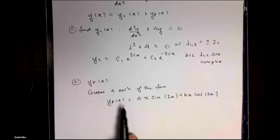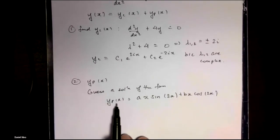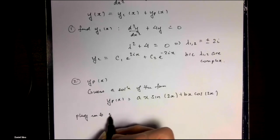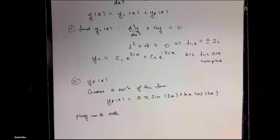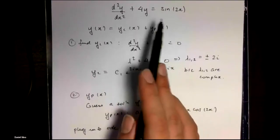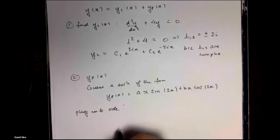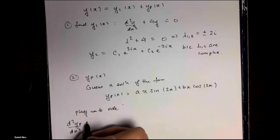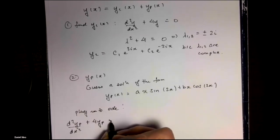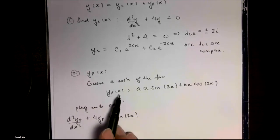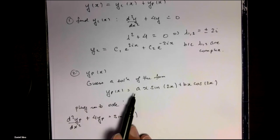Once you have the general form for the particular solution, you plug it into your differential equation. So you plug it back in here and match terms on both sides. The second derivative of the particular solution plus four times that solution has to equal sine 2x.